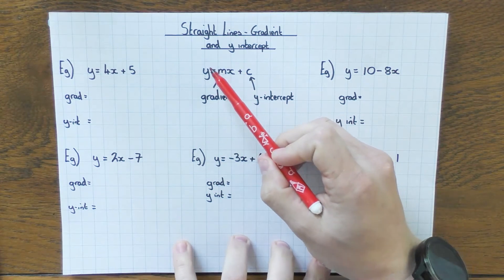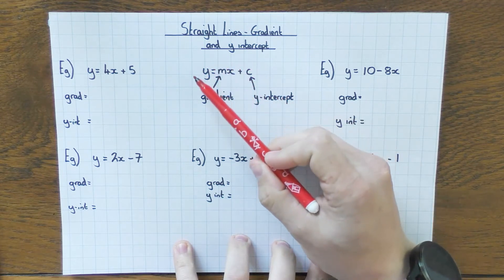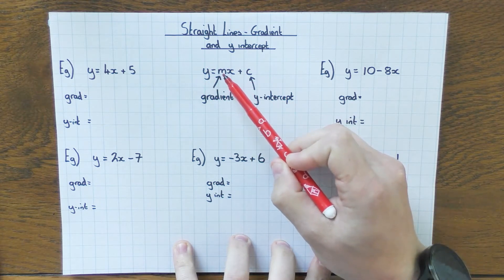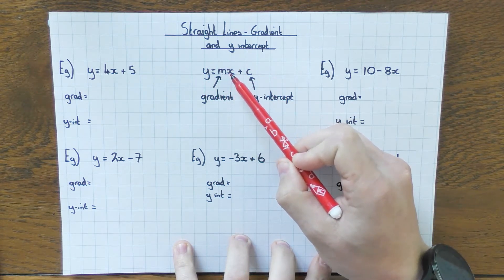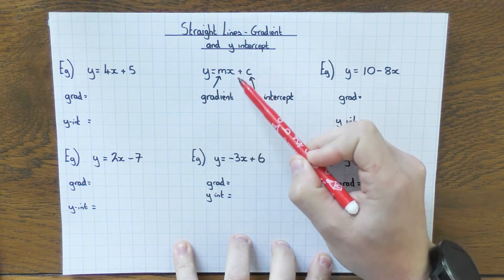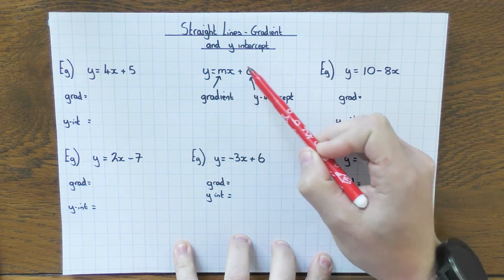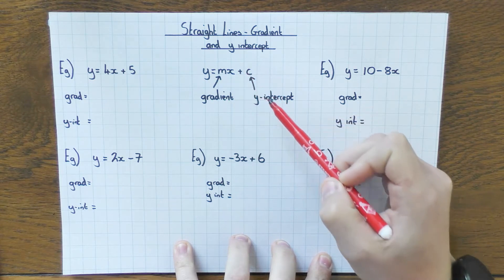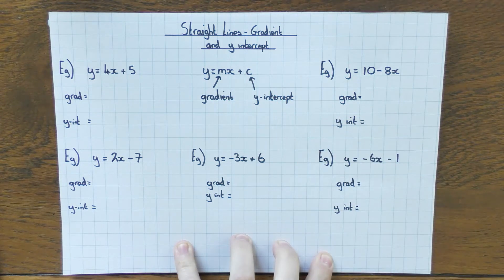Before we do that, just a quick one, the equation of a straight line: y equals mx plus c, where m, the number that's in front of the x but not the x, is the gradient, and then the other number, this can be plus c or minus c, this number at the back here is where it crosses the y-axis.